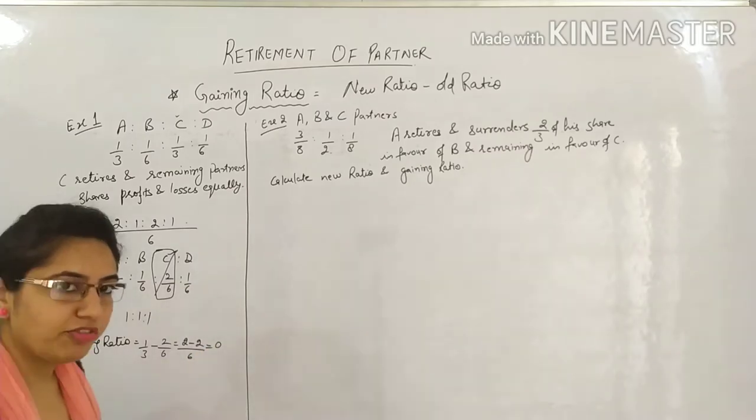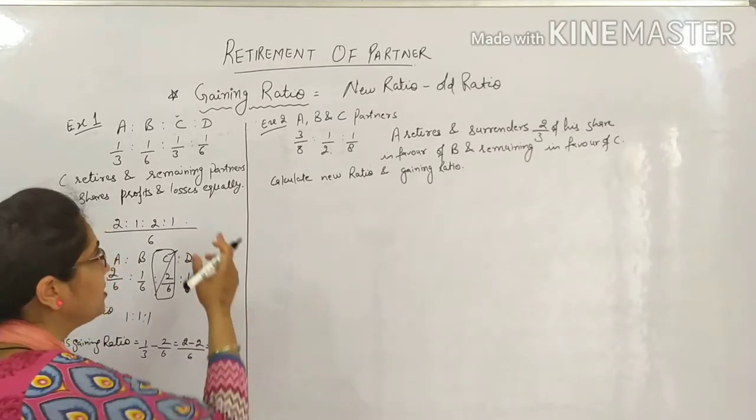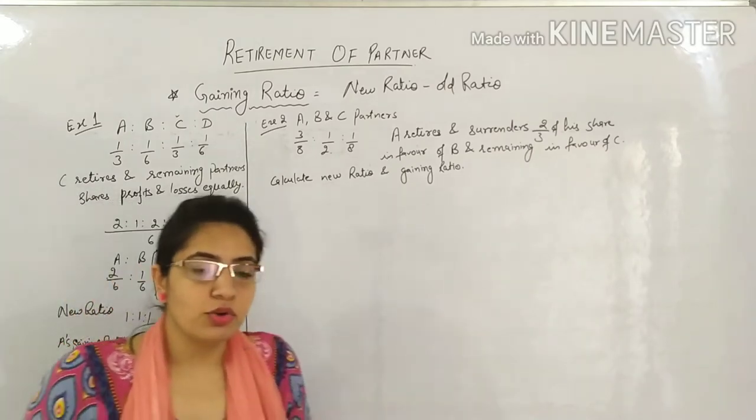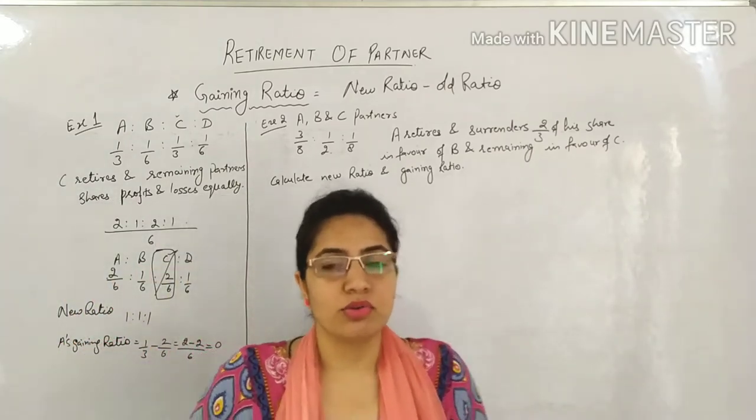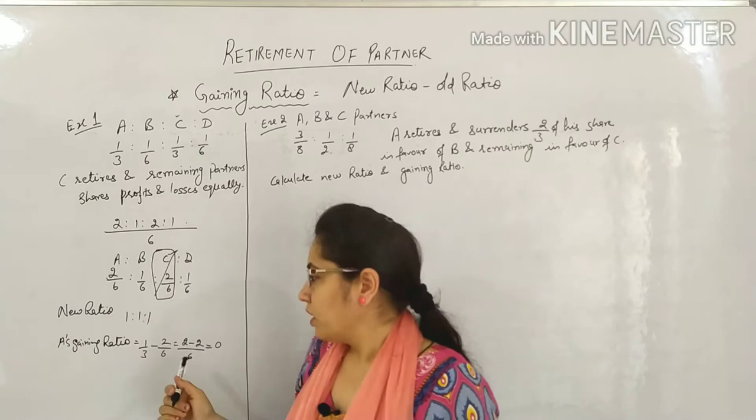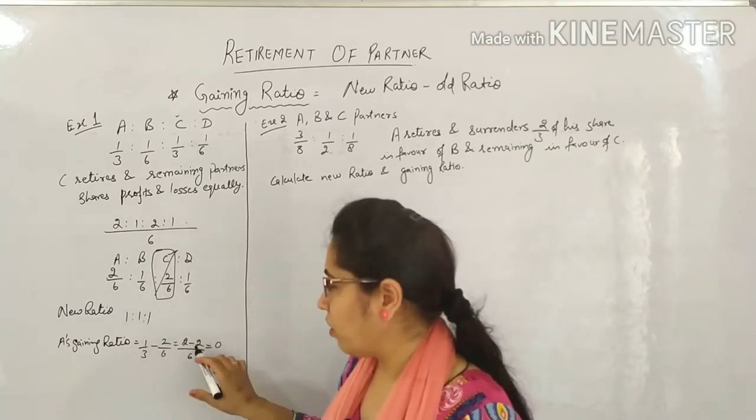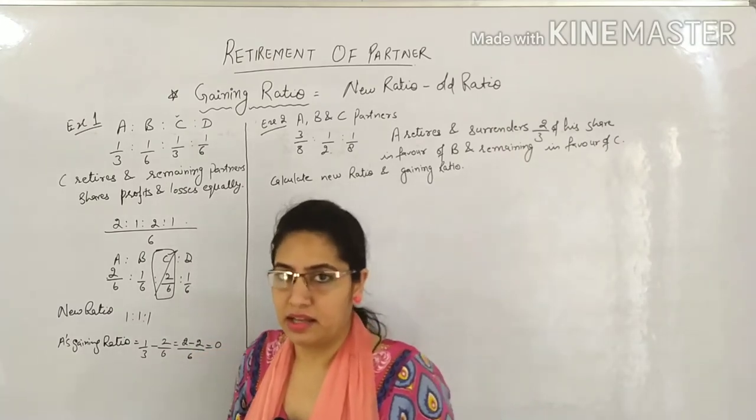Zero means they neither gained nor lost. With Mr. C leaving, they neither gained anything nor sacrificed anything. Zero means earlier also they were getting 2 rupees, and today also they are getting 2 rupees.